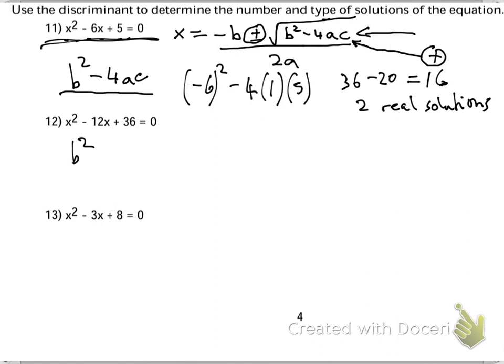If I do b squared minus 4ac here, negative 12 squared minus 4 lots of 1, and c is 36, so I get 144 minus 144, that equals 0.